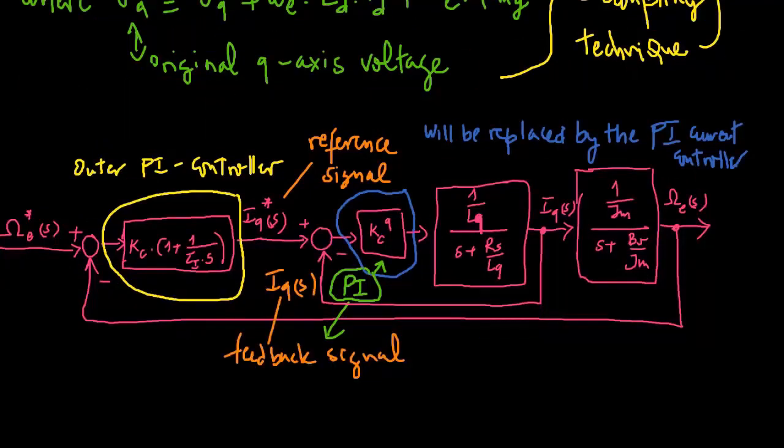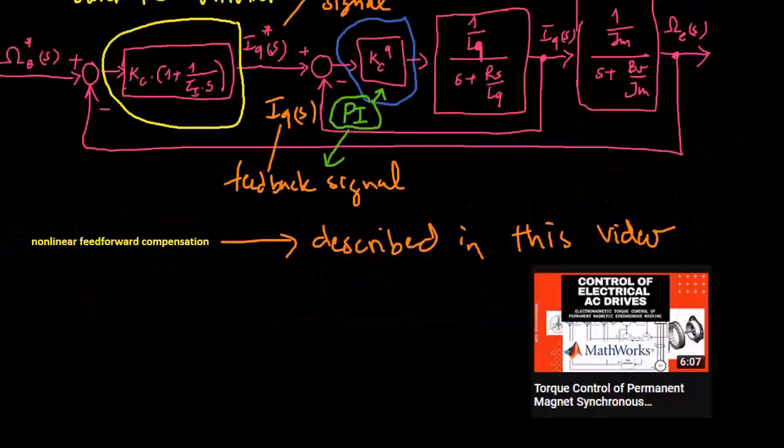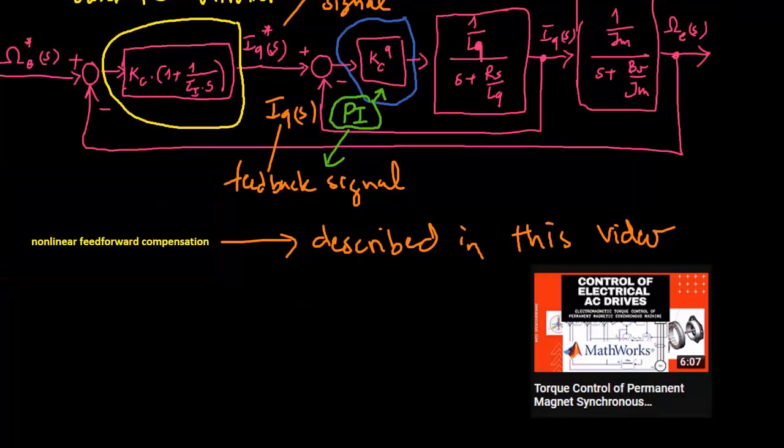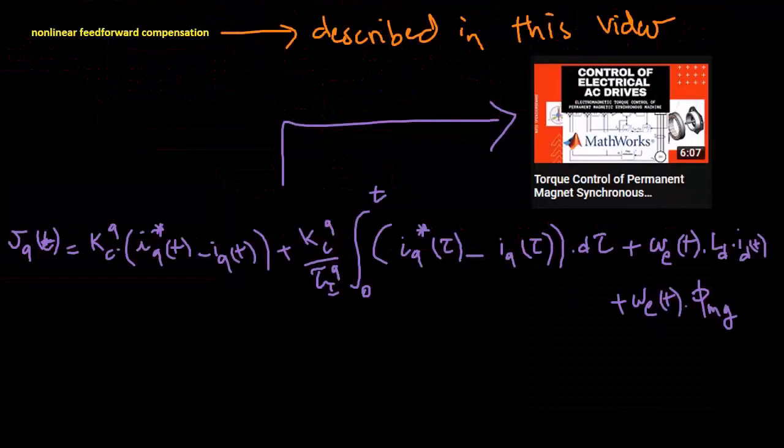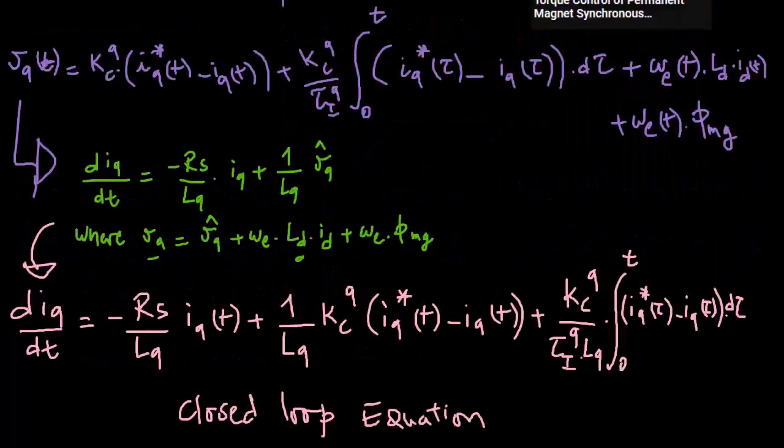By assuming the non-linear terms are negated using a feedforward term, we can integrate the PI controller, defined by a specific equation, into the original dynamic model for the Q-axis current, resulting in a particular closed-loop differential equation.